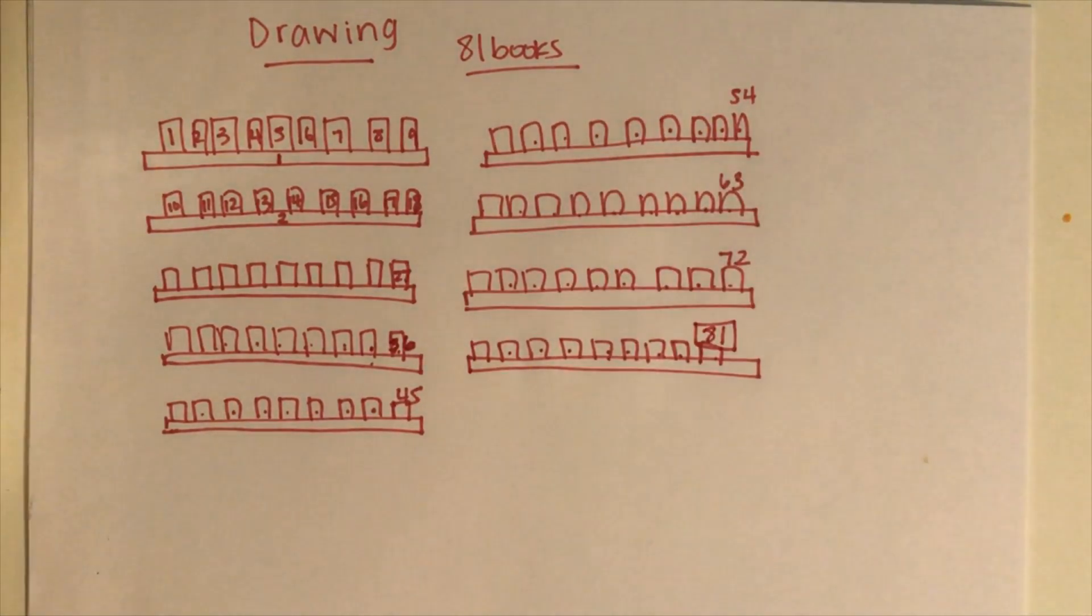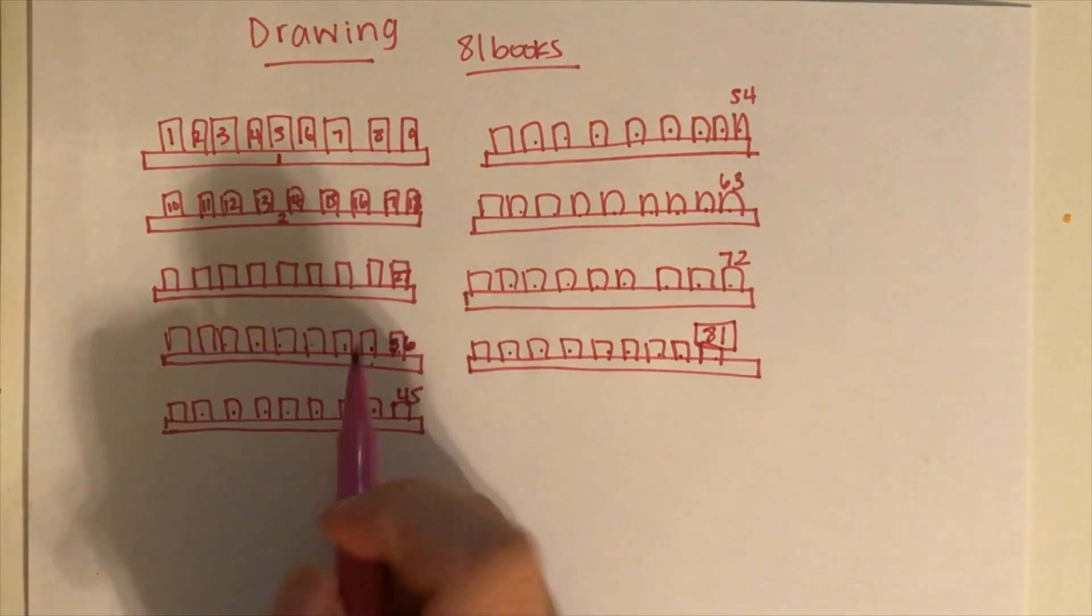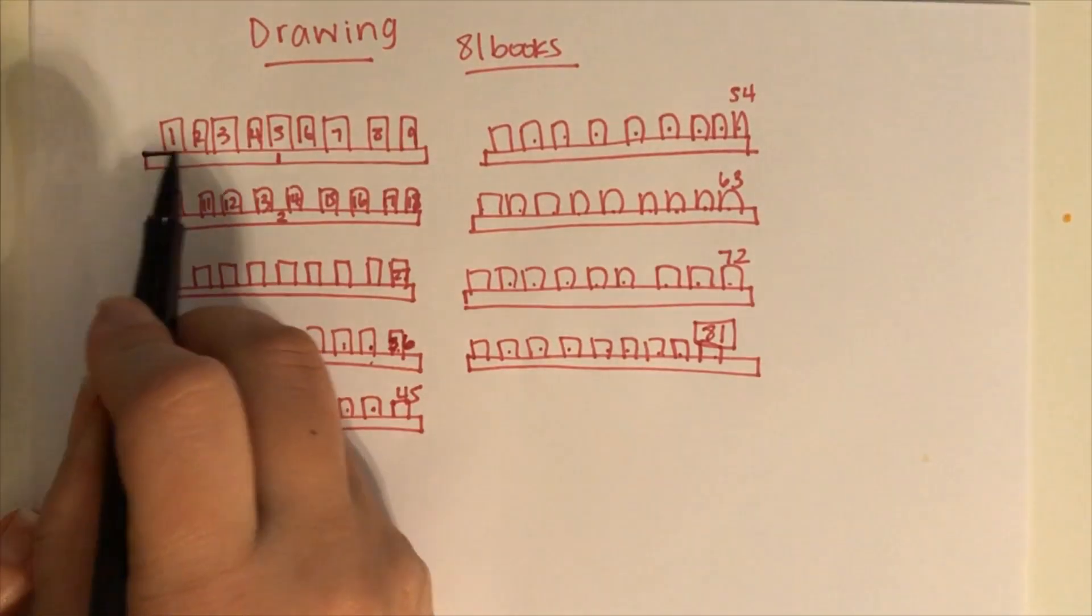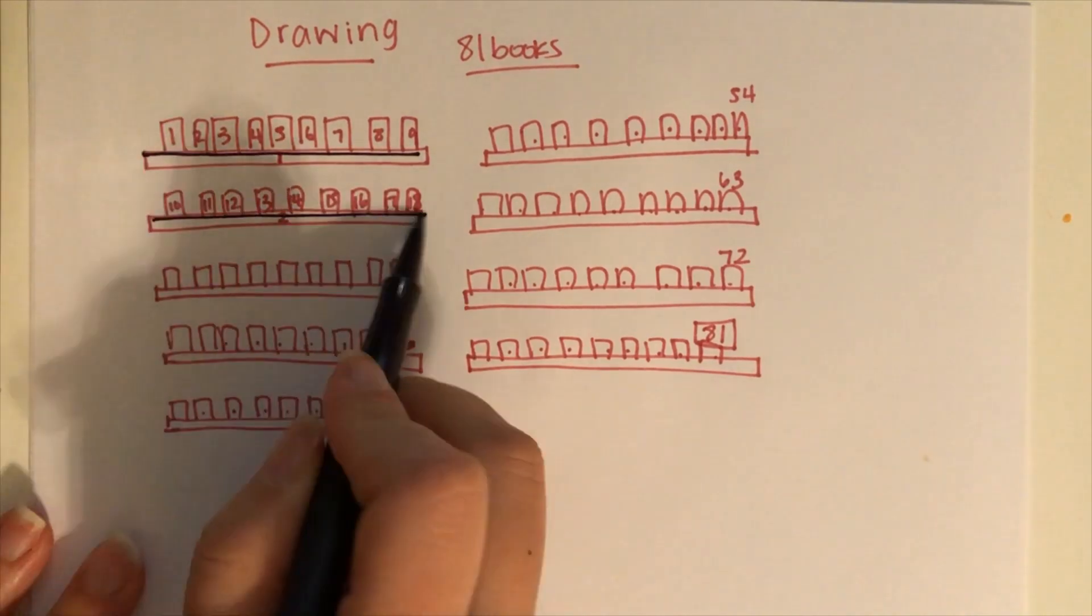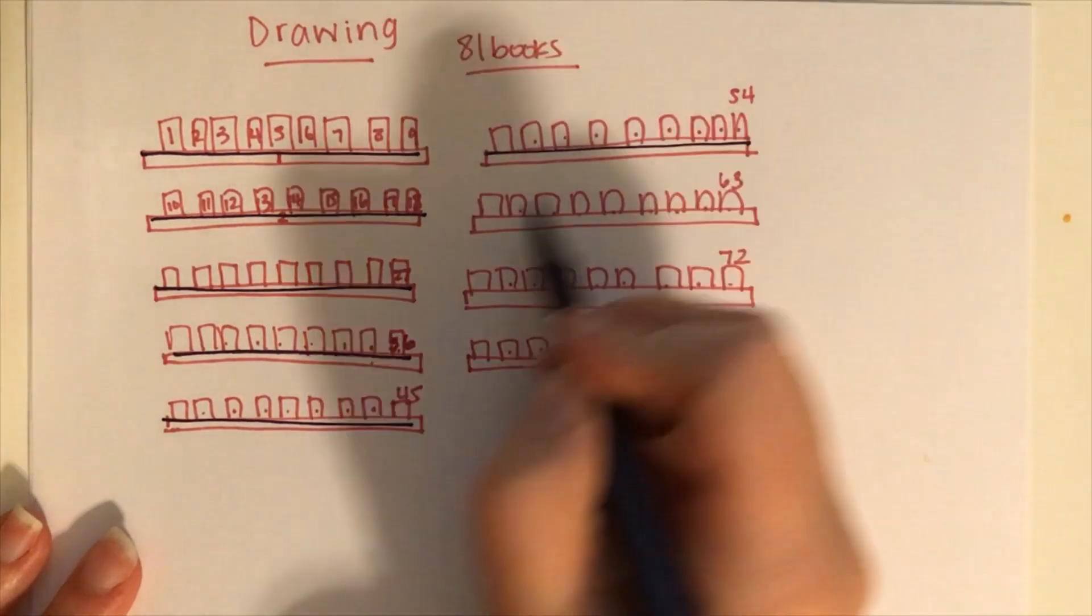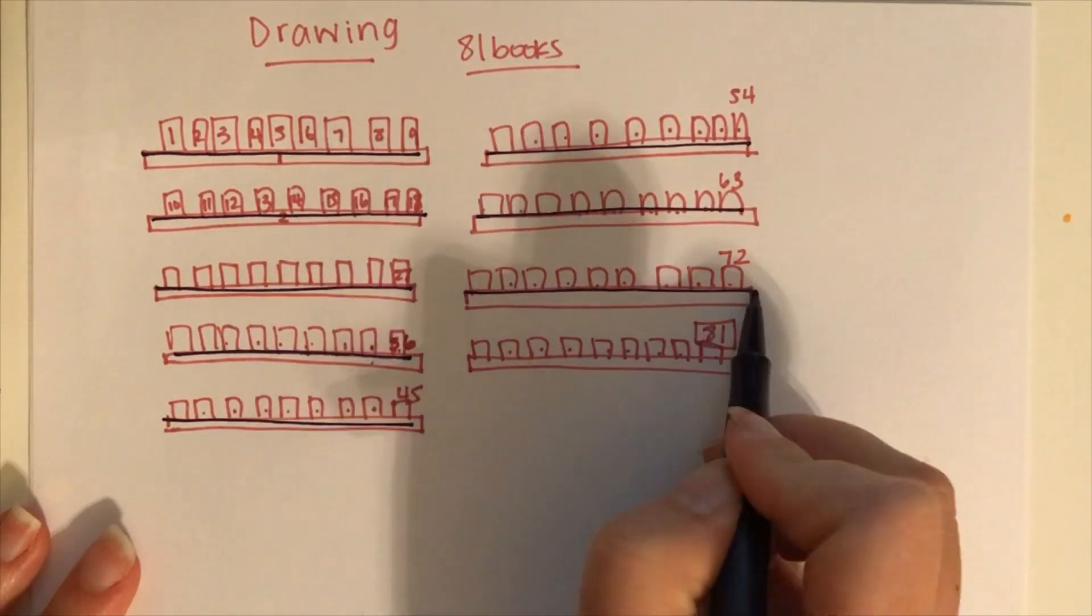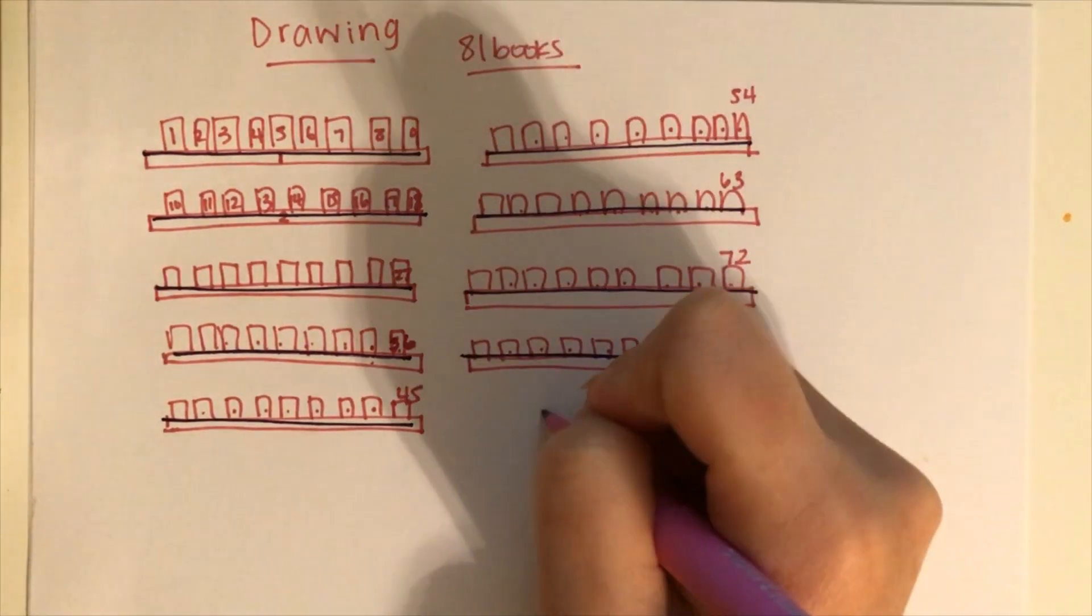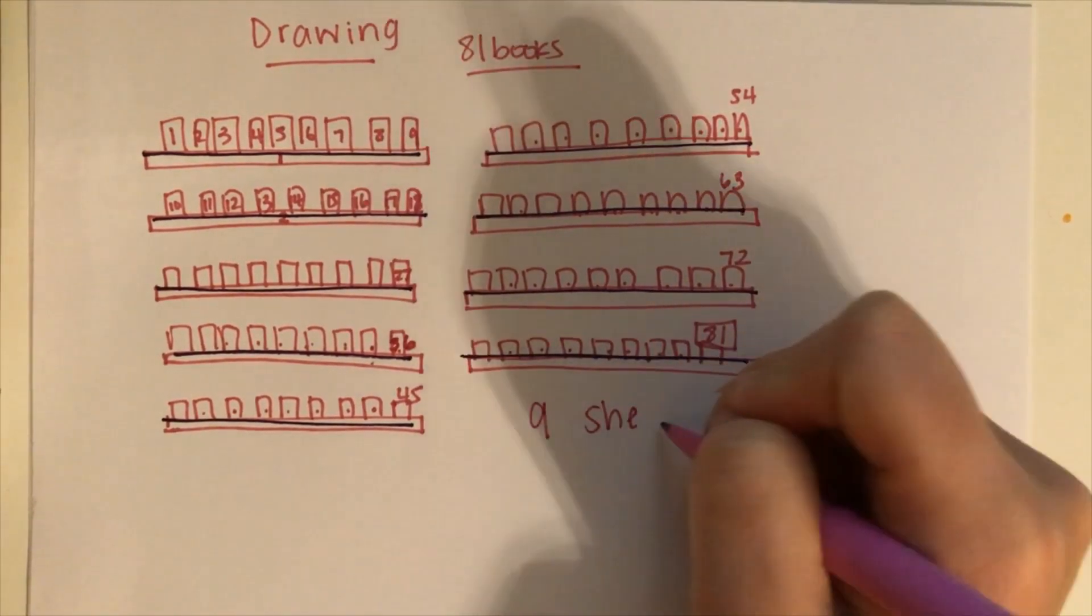Yes, we are at 81 books right now. And now I'm going to count the shelves. So right now, this is shelf number one. This is shelf number two, three, four, five, six, seven, eight, nine. So we used nine shelves.